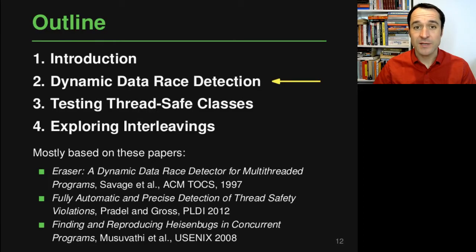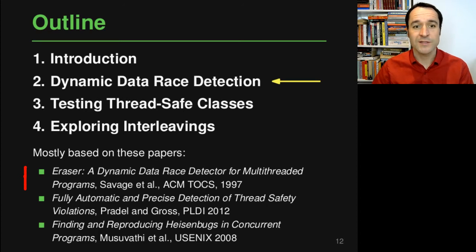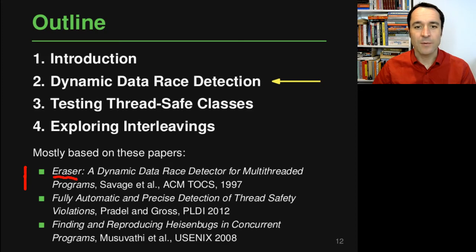Hello and welcome back to program analysis. In this second video of the lecture on concurrency, we will look into how a program analysis can fight data races. In particular, we will look at a dynamic analysis that looks at the running program and tells you whether there has been a data race or at least a potential data race. There are many different ways a dynamic analysis could look for data races, and we'll focus on one of the earlier approaches, called Eraser. If you want to know more about it, you should have a look at the paper.